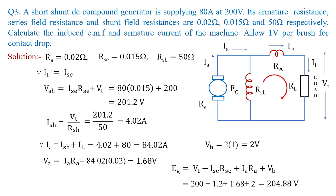As homework, take a long-shunt DC compound generator with all these same parameters and calculate the value of Eg. Comment in the chat box whether you are getting more or less than 204.88 volts. When we deal with the characteristics of the compound generator, you will be able to understand how the compound machine behaves as a generator — whether long-shunt produces more or less generated voltage compared to short-shunt.